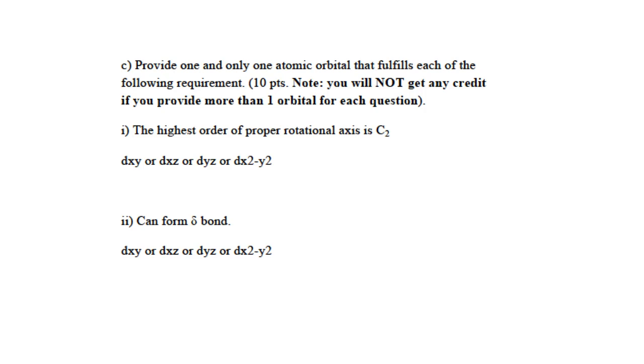The third question: provide one and only one atomic orbital that fulfills each requirement. The first is about symmetry, asking for an orbital that has C2 as the highest order of proper rotation axis. Having C2 as the highest order would eliminate s orbitals because s orbitals are spherical in shape, so they will have C2 everywhere. It will also eliminate p orbitals because p orbitals also have C2 axis.